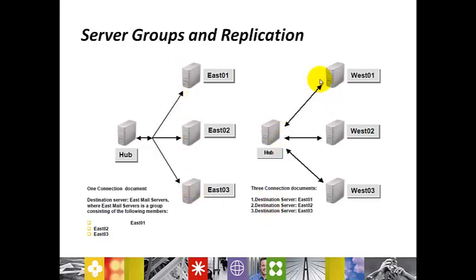And if you take another example here, there are three connection documents for three different servers: destination server east 1, east 2, and east 3. So if you want to minimize your administration facilities, you can create a server group and create one connection document for this group and start managing the replication process.